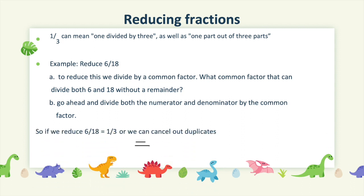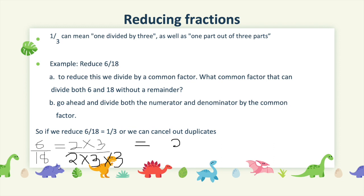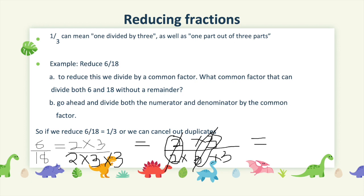We can also reduce by cancelling out duplicates by writing out the factors of the numerators and the denominators. In this case, the factors of 6 are 2 and 3 because 2 times 3 gives us 6. The factors of 18 are 2 times 3 times 3, which is 18. Now, we can go ahead and check for duplicates or repetitions of the same number that appear in the numerator and denominator. When we cancel the duplicates out, we are left with 1 as numerator and 3 as denominator. Note that we didn't say 0 is left as a numerator — 1 is left because when we divide a number by itself, it gives you 1.